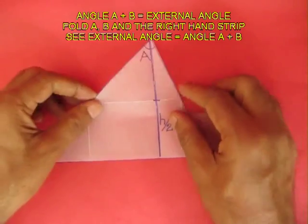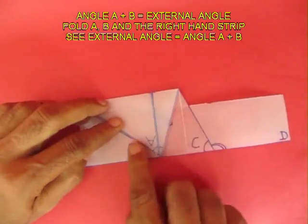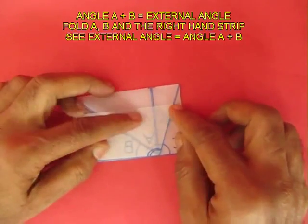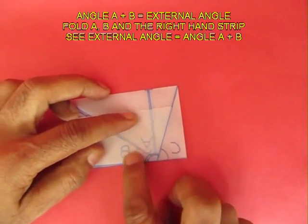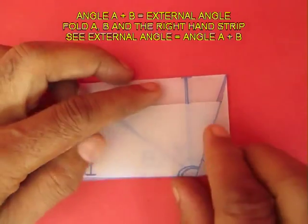Now we will see that A and B is equal to the external angle. Fold A and B and bring to side D and you will see that A, B and C is equal to the double line exterior angle.